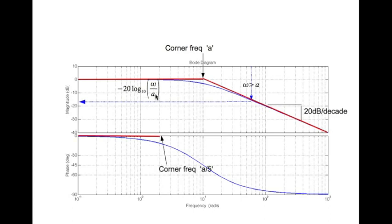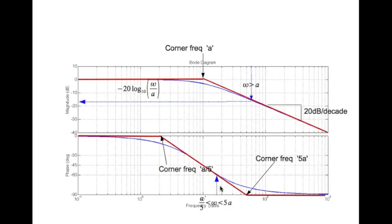For the phase plot of the real pole: the phase is zero until the corner frequency a divided by 5; the phase is minus 90 degrees from the corner frequency 5a to infinity; and in between it follows a straight line. At any frequency omega between a/5 and 5a, the phase is minus 90 times log base ten of (5 omega divided by a), divided by log base ten of 25.